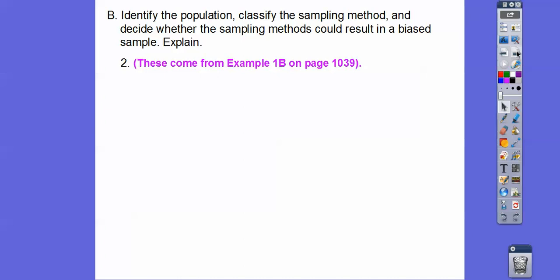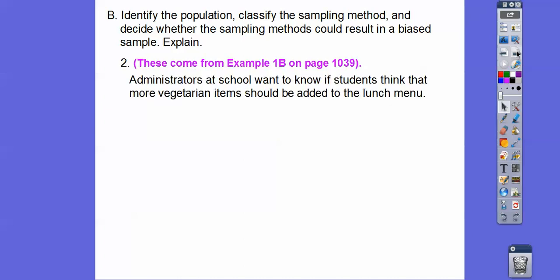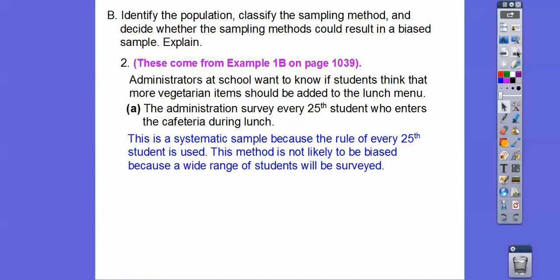So this one's example 1B. And so this talks about lunch. So administrators at a school want to know if students think that a more vegetarian item should be added to their lunch menu. So the administrators survey every 25th student who enters the cafeteria at lunch. Well, this is a systematic sample because the rule of every 25th student is used. So this method is not likely to be biased because a wide range of students will be surveyed that way.